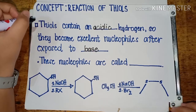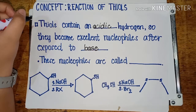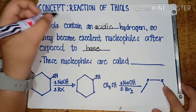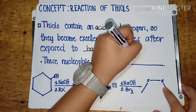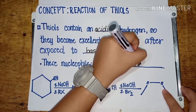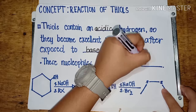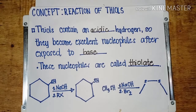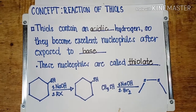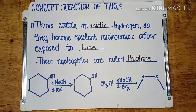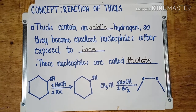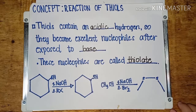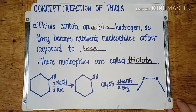After exposing it to base and pulling off that hydrogen, it's going to be a great nucleophile when the sulfur has a negative charge — and this is called a thiolate. A thiolate nucleophile is capable of performing a few different reactions, and that's what we want to go over right now.